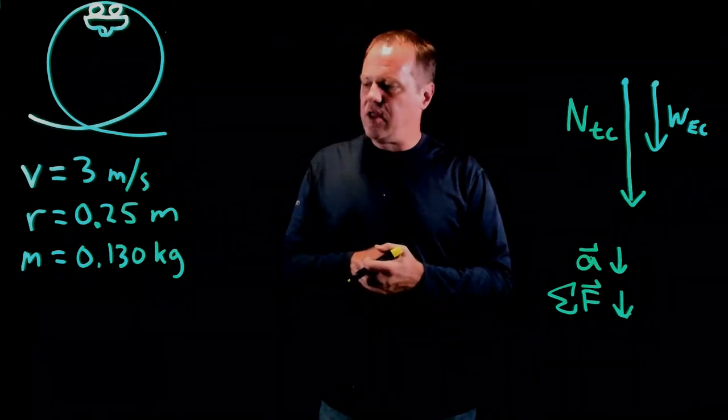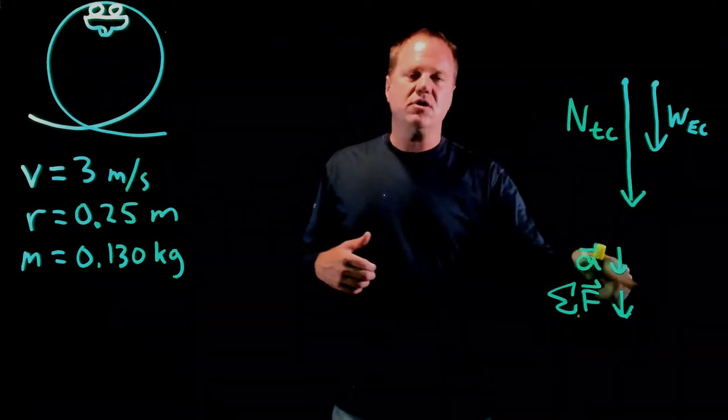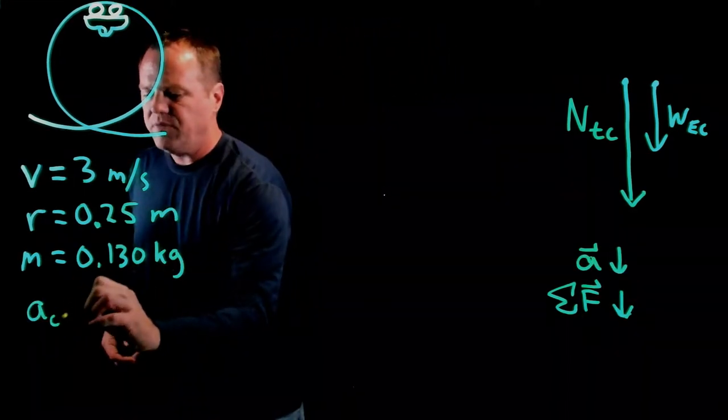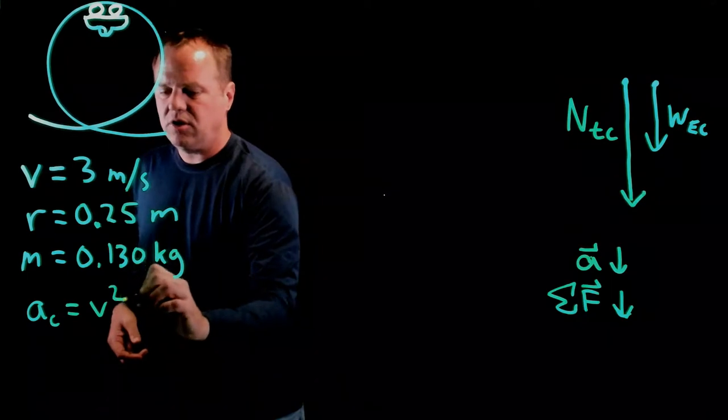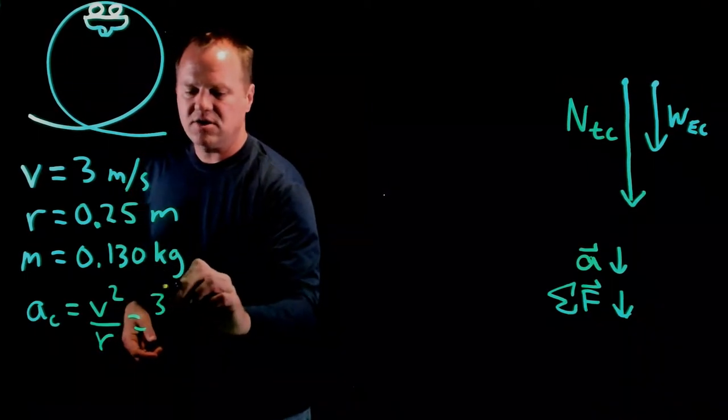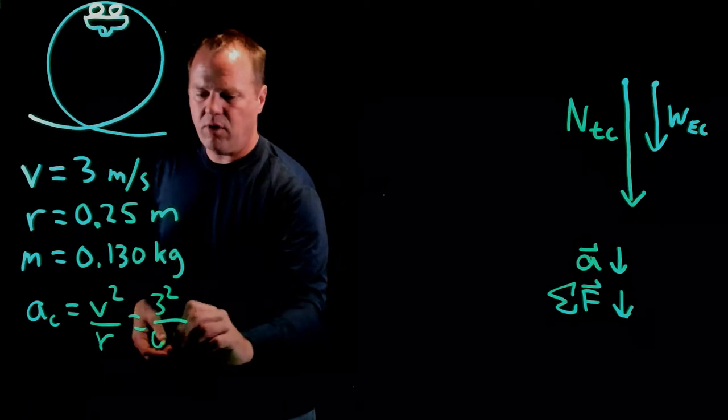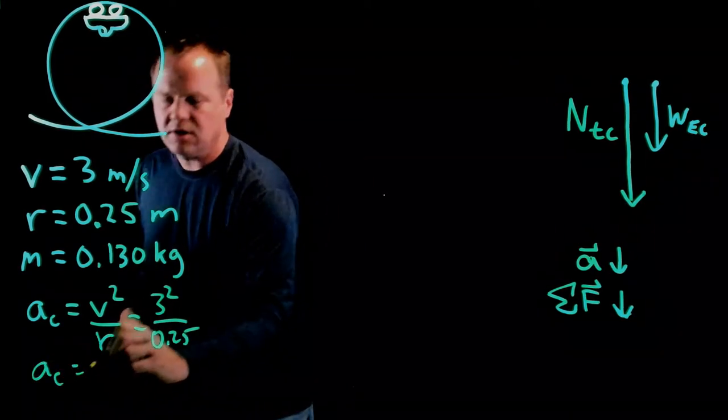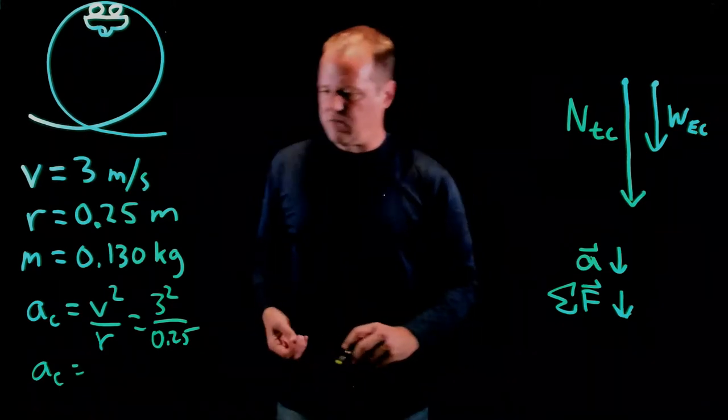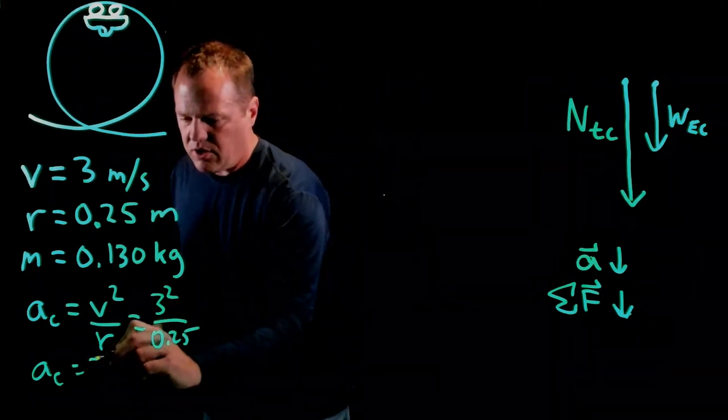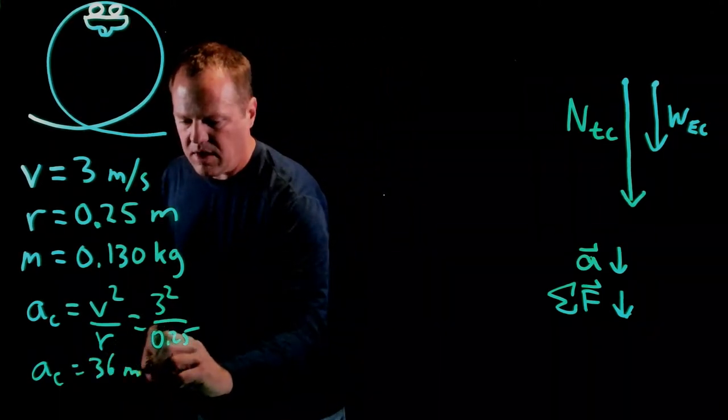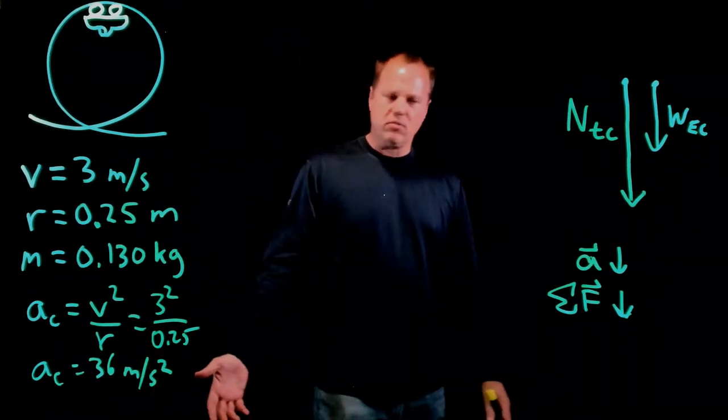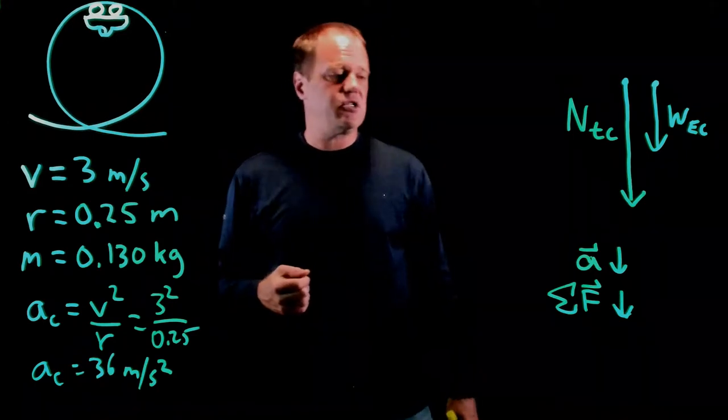So I can calculate the magnitude. I know the direction of the acceleration is down. The magnitude can be calculated using this formula. So for circular motion, it's the speed squared over the radius, so 3 squared over 0.25. The centripetal acceleration directed towards the center of the circle is 36 meters per second squared.